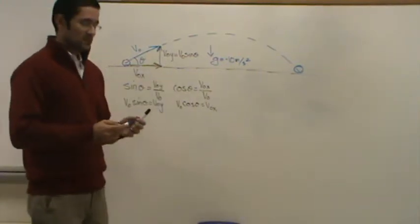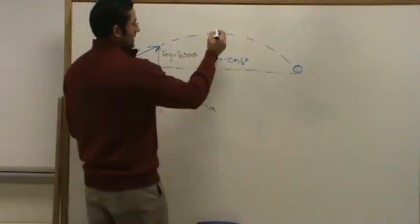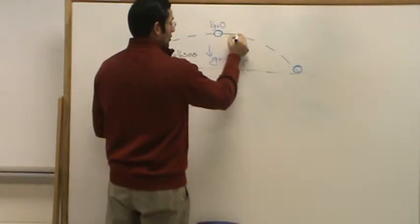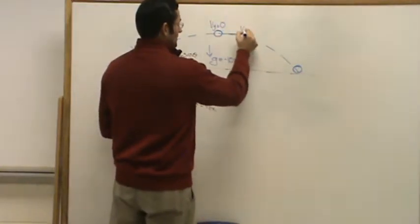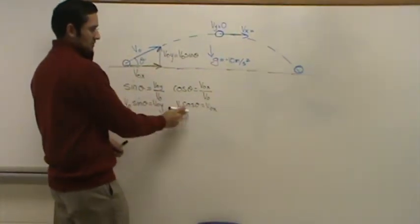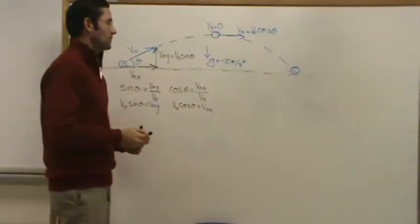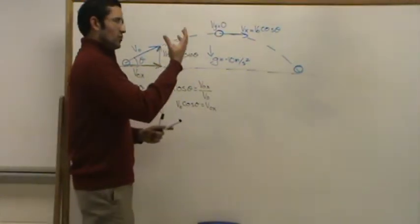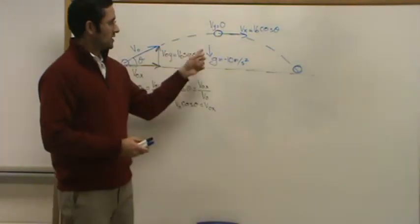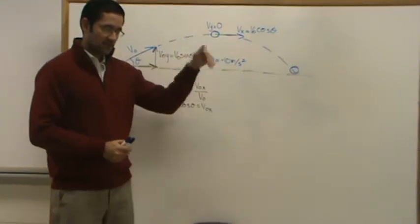When the vertical velocity becomes zero, the ball cannot go any higher — that's considered the highest point. The horizontal velocity will still remain V naught cosine theta, but the vertical velocity diminishes to zero. That's why it's the highest point. Then when the ball starts falling back down to the ground, the vertical velocity starts increasing, because the acceleration of gravity is now pointing in the same direction as the ball traveling downwards.